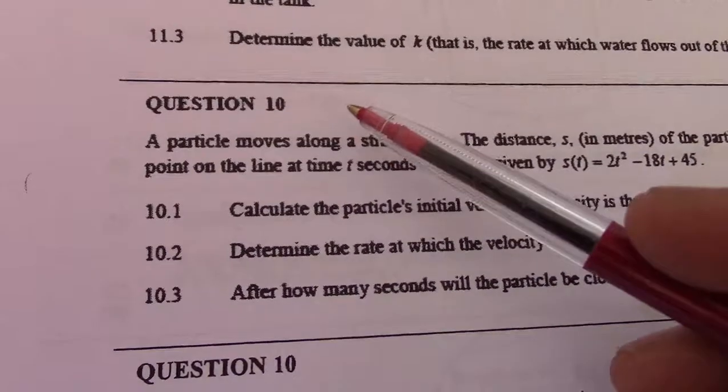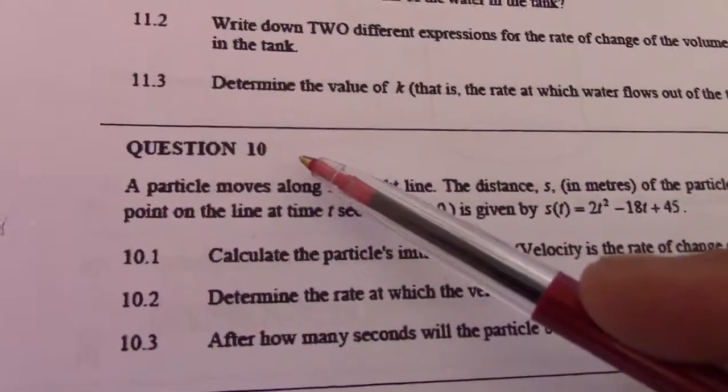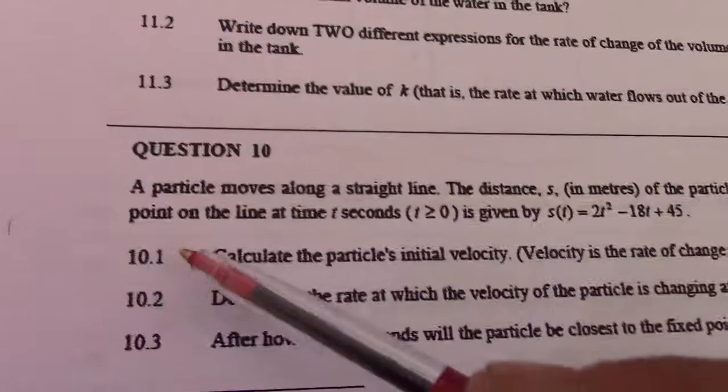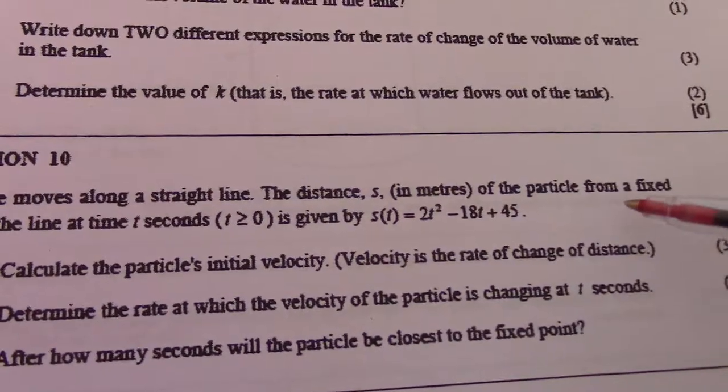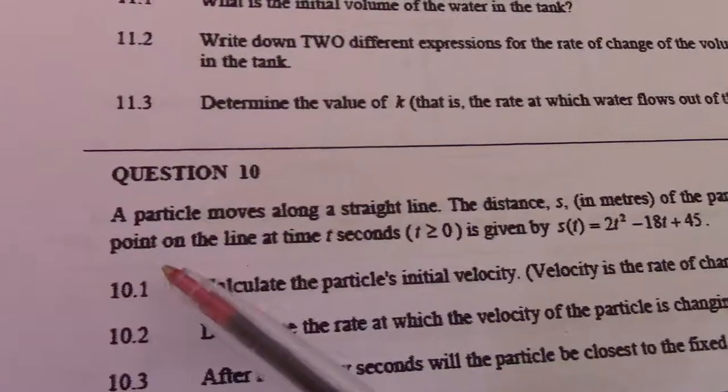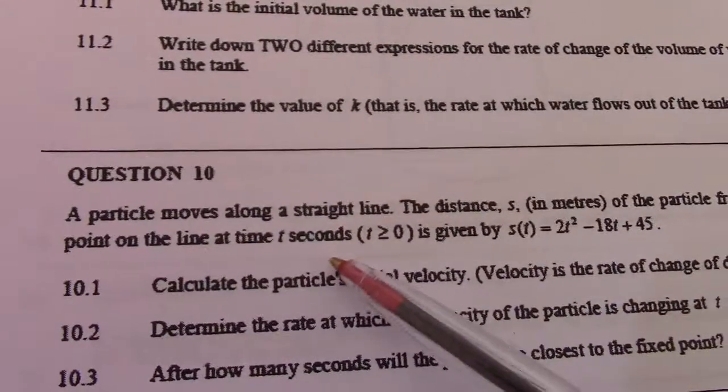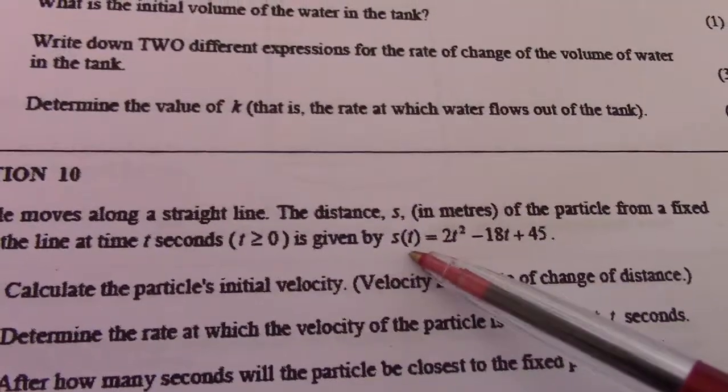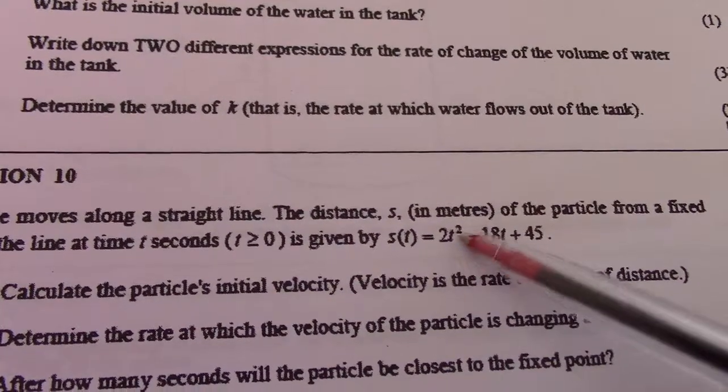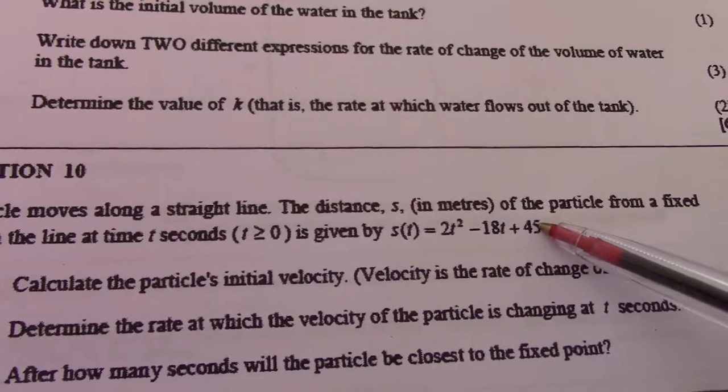All right, still the application of calculus, but now we're going to calculus of motion, question 10. A particle moves along a straight line. The distance s in meters of the particle from a fixed point on the line at time t seconds, t ≥ 0, is given by s(t) = 2t² - 18t + 45.